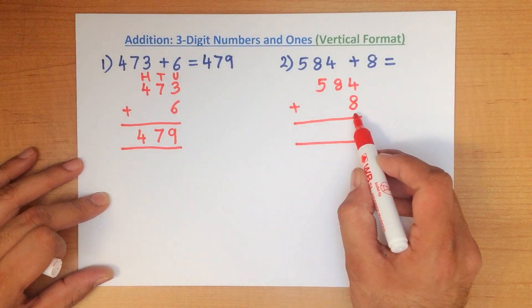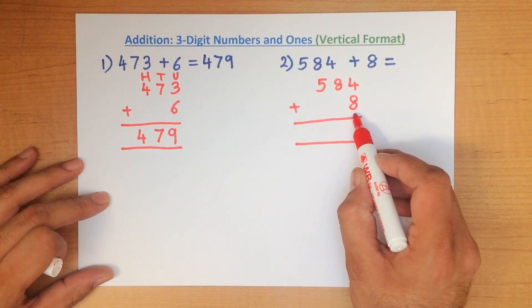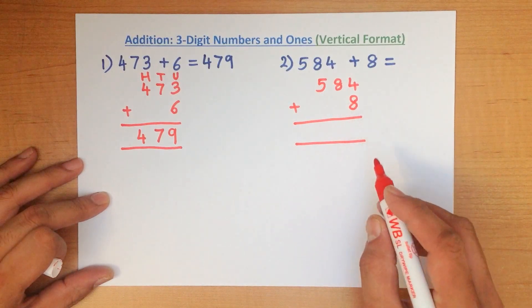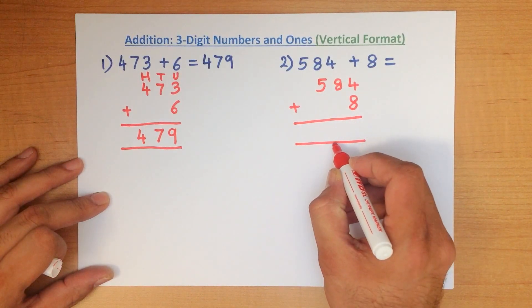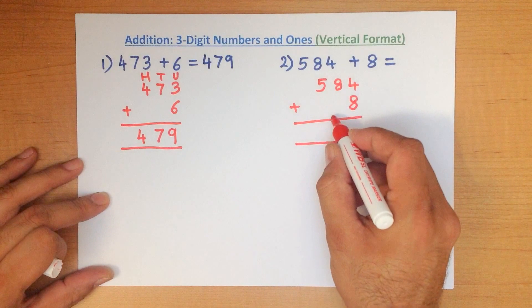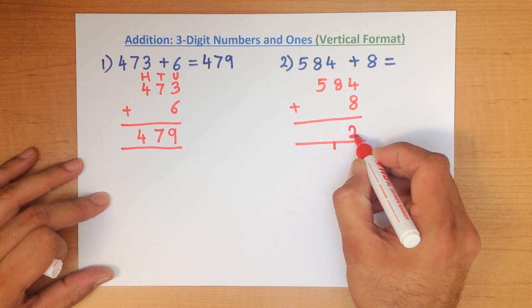So, what is 4 plus 8? That's right, it's 12. And do you remember how we write this? We put 1 here, which becomes part of the tens column, and 2 here.